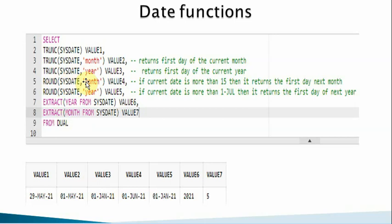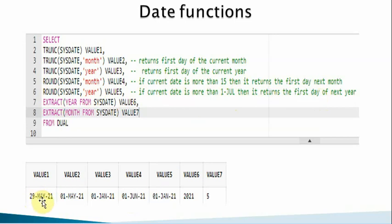The ROUND function for dates: ROUND(SYSDATE, 'MONTH') — if the current date is greater than the 15th, it returns the first day of the next month. Since today is May 29th, which is greater than the 15th, it returns June 1st. ROUND(SYSDATE, 'YEAR') — if the current date is past July 1st, it returns the first day of next year; otherwise it returns January 1st of the current year, which is January 1st, 2021. The EXTRACT function extracts parts of a date: EXTRACT(YEAR FROM date) returns 2021, and EXTRACT(MONTH FROM date) returns 5.